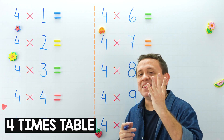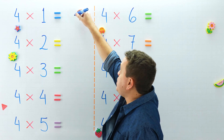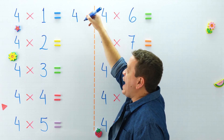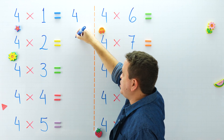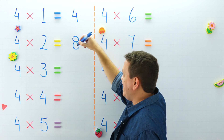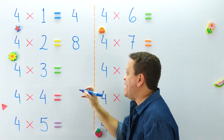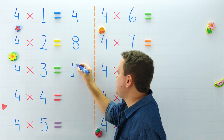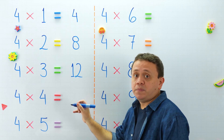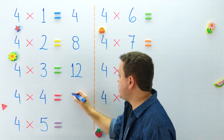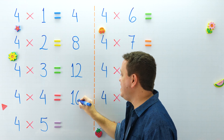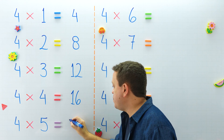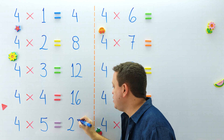And why don't we study the 4 times table? 4 times 1 equals 4, and 4 times 2 equals 8. 4 times 3 equals 12. And 4 times 4 equals 16. 4 times 5 equals 20.